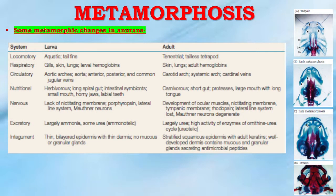There are some metamorphic changes in anurans. For example, in the locomotory system, in larvae it is aquatic with a tail fin, but in the adult it is a terrestrial and tailless tetrapod. In the respiratory system, larvae have gills, skin, lungs, and larval hemoglobin, but in the adult it is skin, lungs, and adult hemoglobin.